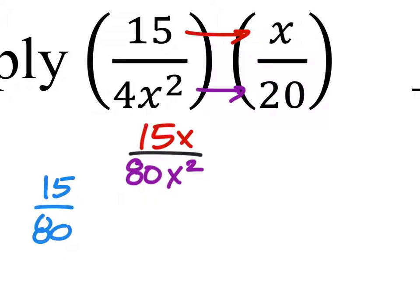Well, both of these are divisible by 5—they end in either 0 or 5. And that gives us 3 over 16.